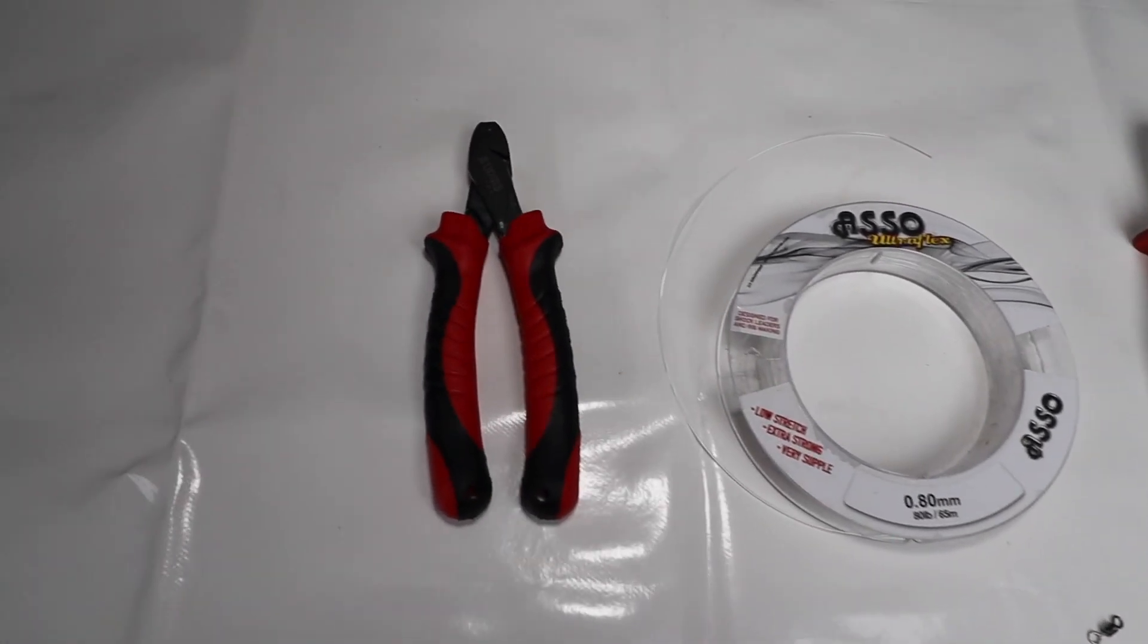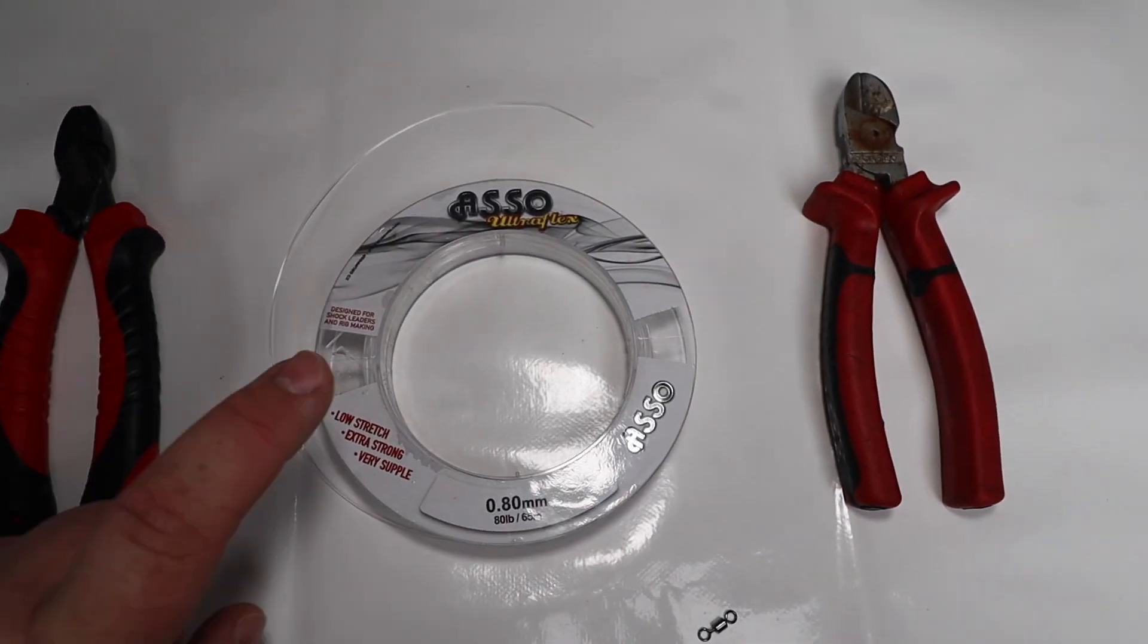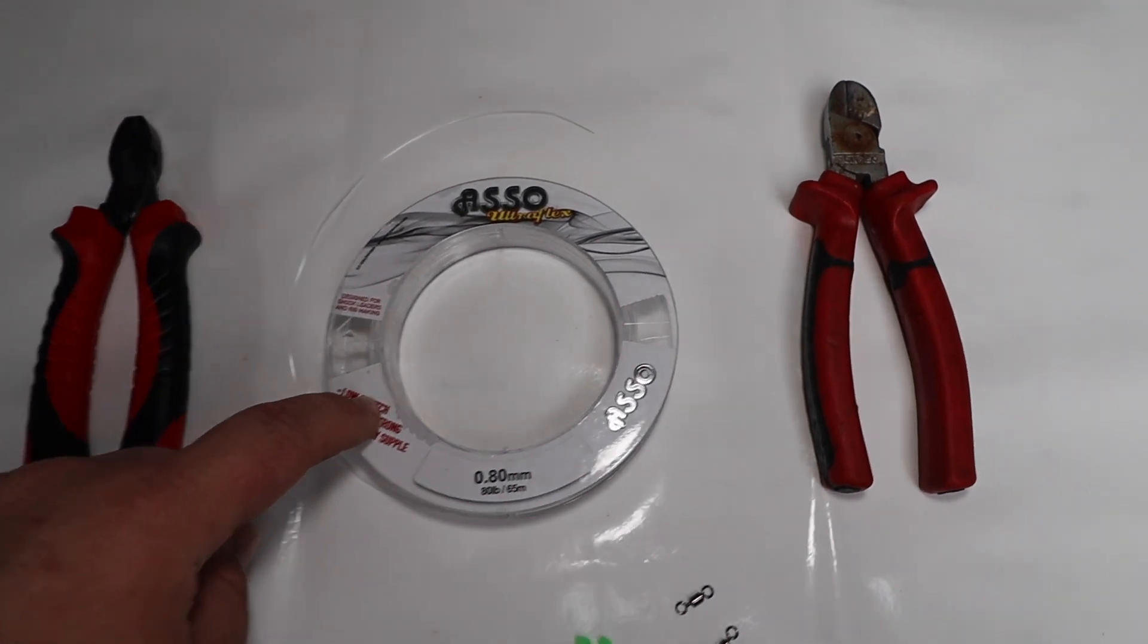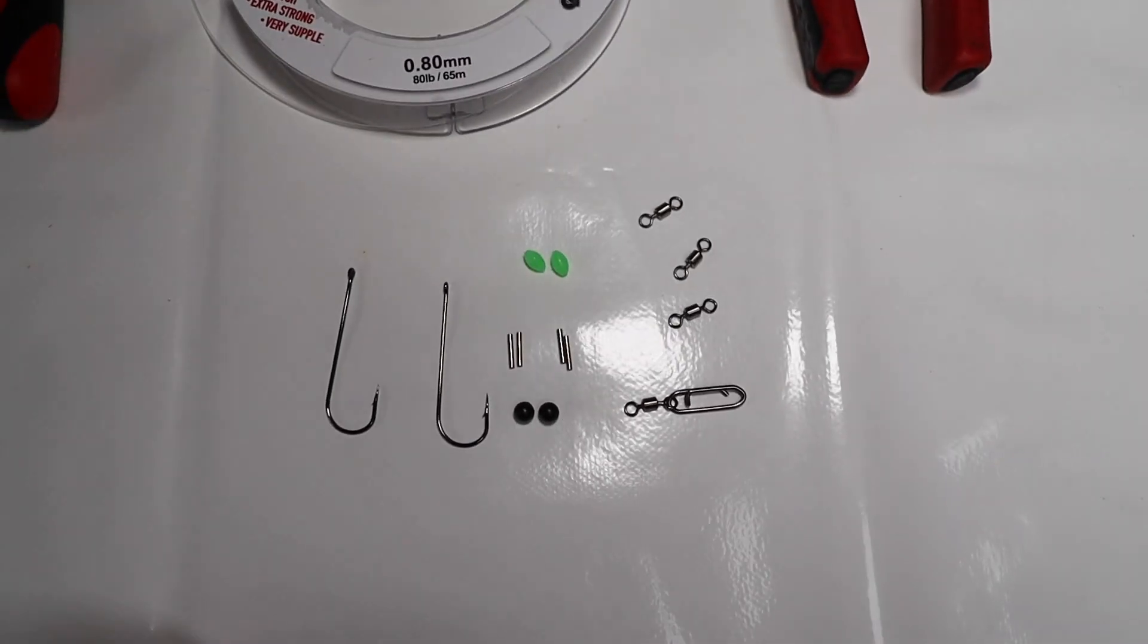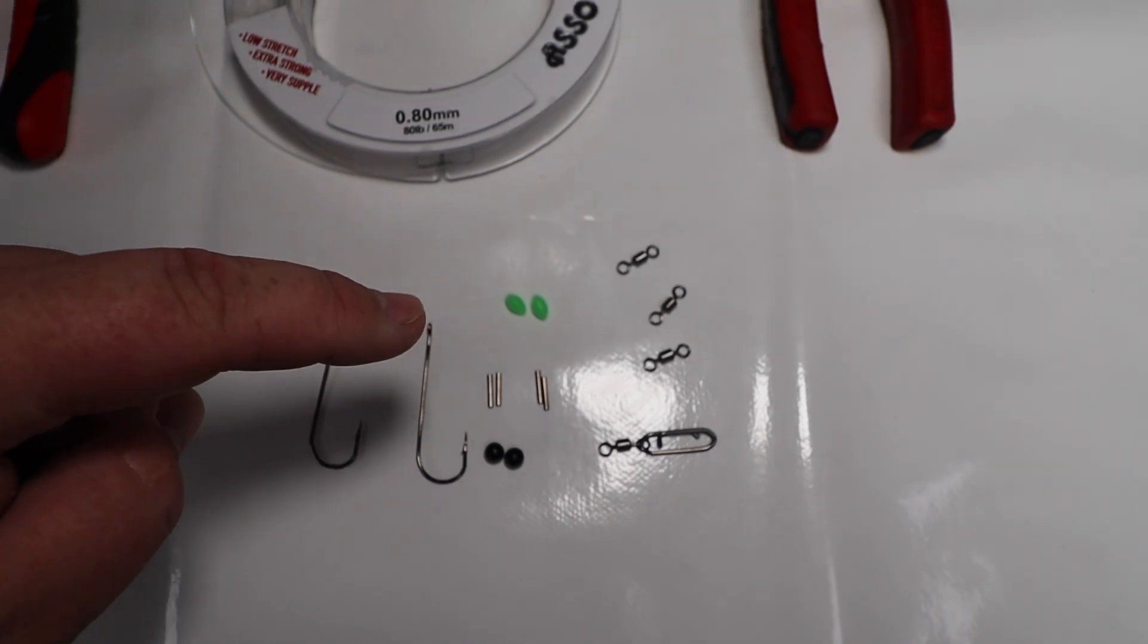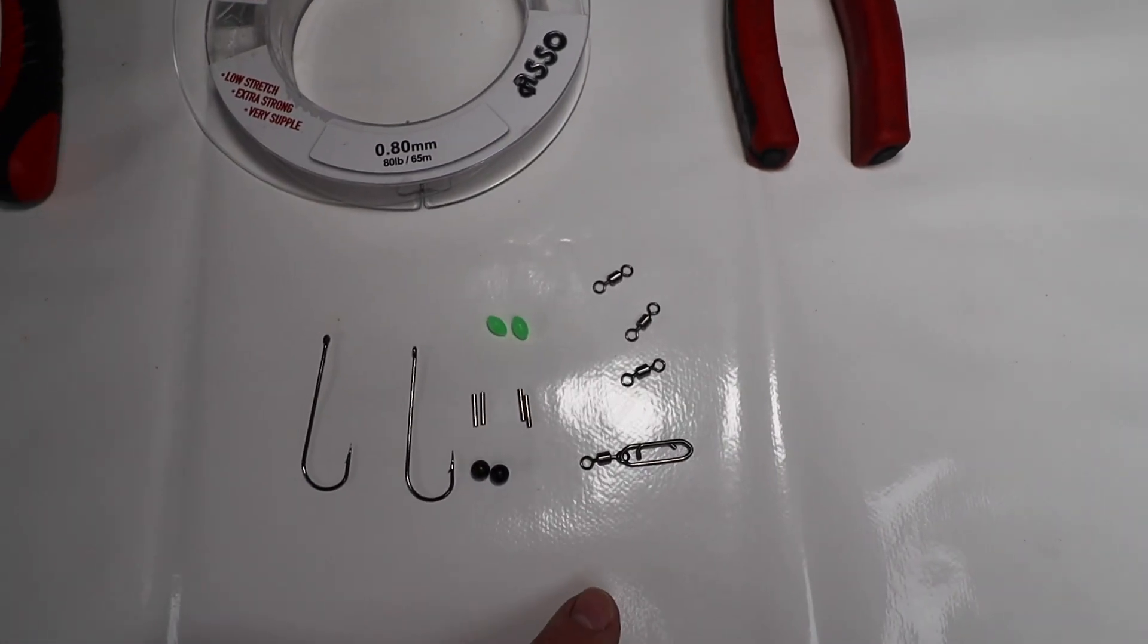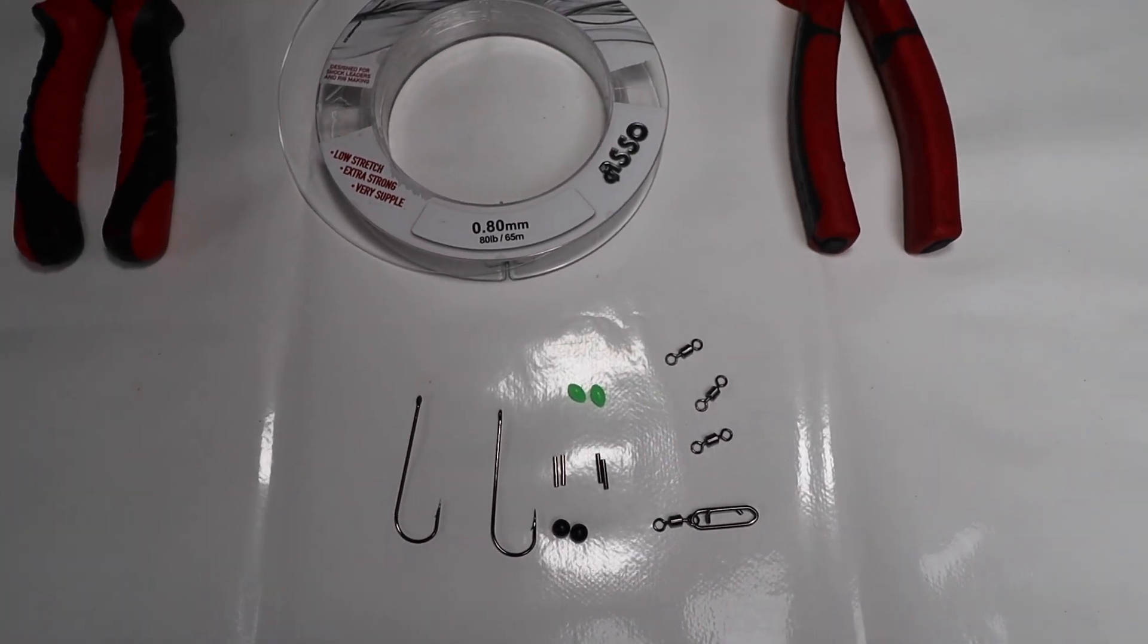First things first, we're going to need a pair of crimpers, some line - this is just Aso UltraFlex what I always use - something to cut the line with, and very simply today two hooks, two smaller black beads, two green oval beads, three swivels and one swivel link, and four crimps. That's all we're going to need to do this rig.